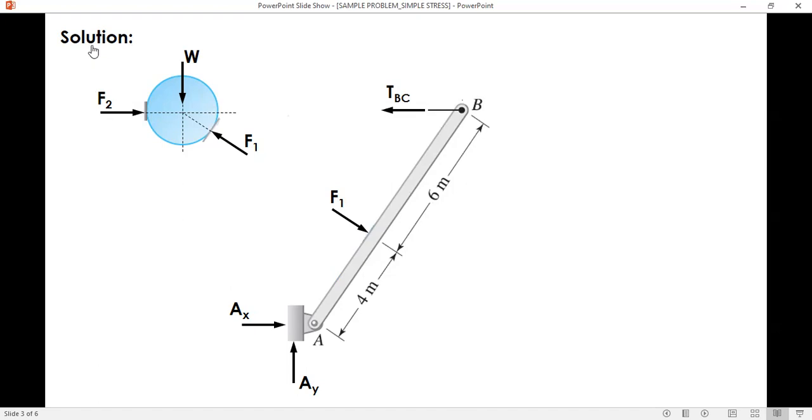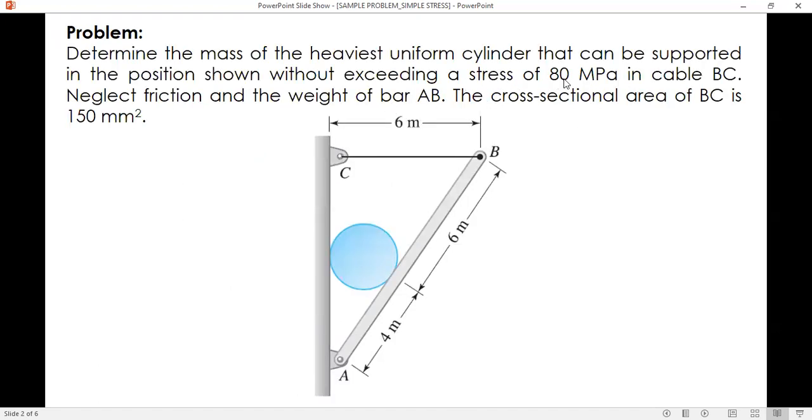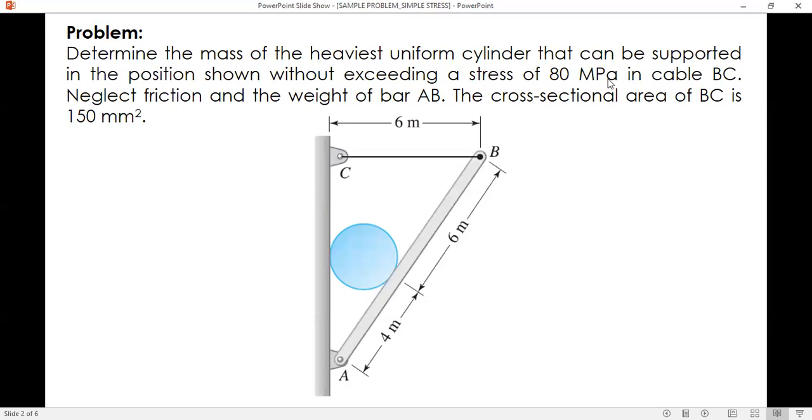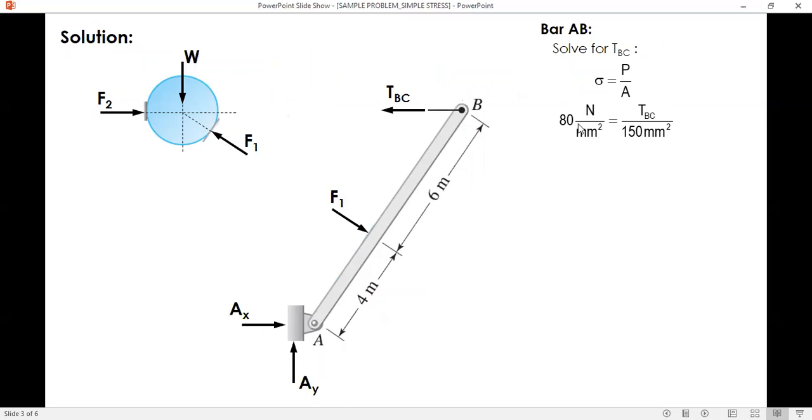The given quantities are the allowable stress of cable BC which is 80, and the cross-sectional area of BC which is 150 mm². Solving for TBC, this is the formula: stress equals force over area. The unit of stress is megapascals, and megapascals is equivalent to newtons per mm². 80 equals tension BC over 150. We can cancel out mm² and what remains is newtons. To solve for tension BC, we cross multiply 150 to the left side and we have TBC equal to 12,000 newtons.